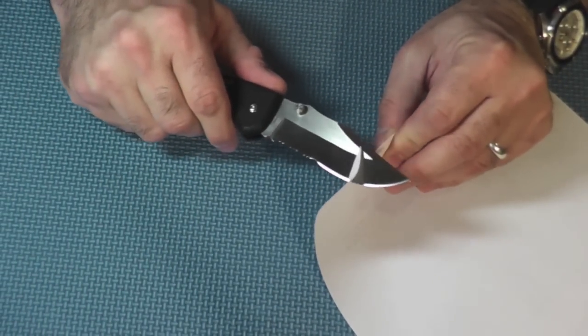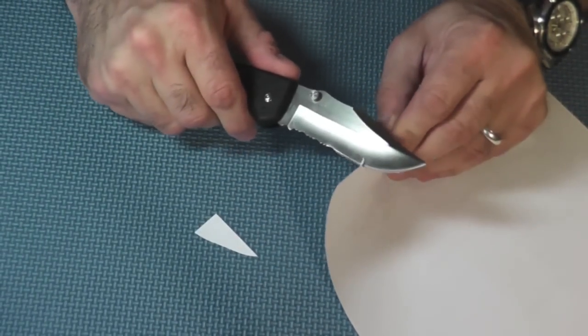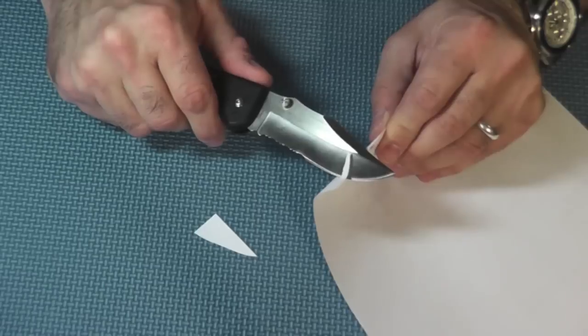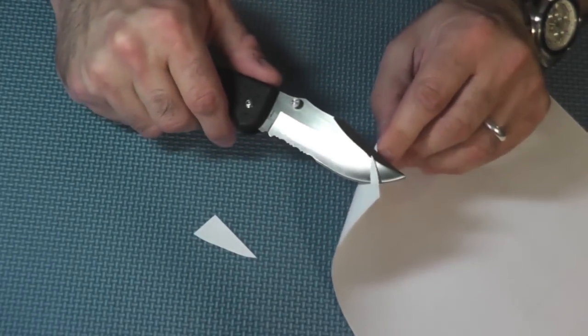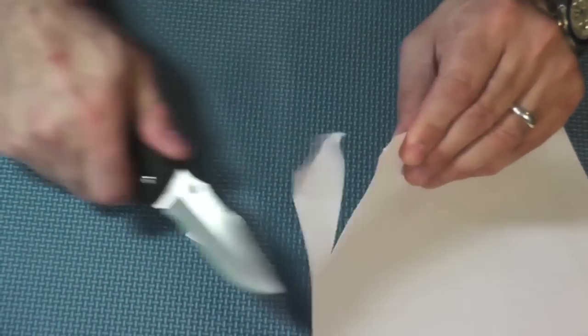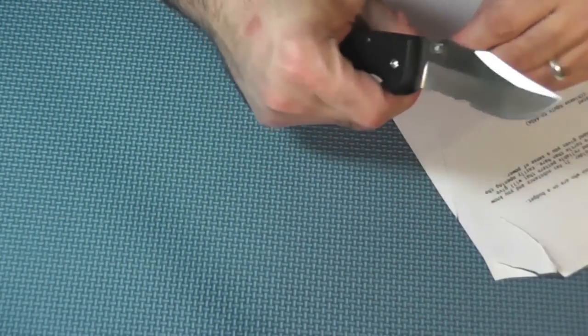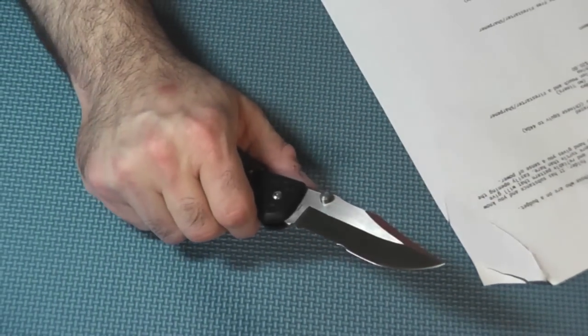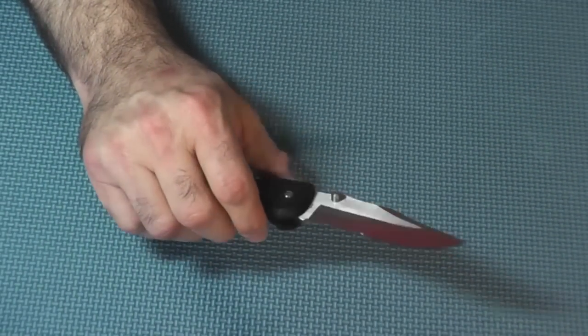So let's go ahead and do our customary paper test. And let's see if it's sharp out of the box. Look at that. It's almost push cutting. Looks like it caught a little bit of an imperfection there. But it's very good. So it's very sharp out of the box. Hey, don't be reading my notes. So what's next? We did the paper cut.